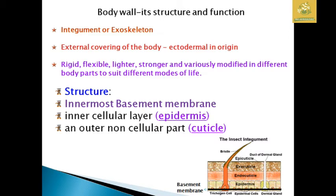While seeing the body wall — its structure and function — you must know that insects are made up of an exoskeleton, also known as integument. The external body covering is ectodermal in origin. It is rigid, flexible, lighter, stronger, and variously modified for different body parts suited to different modes of life and endurance. The structure consists of an innermost basement membrane; the inner cuticular layer is the epidermis, and the outermost layer is the cuticle.